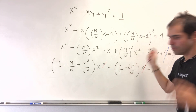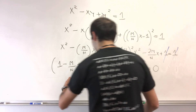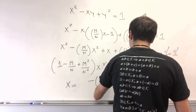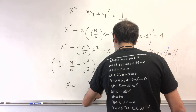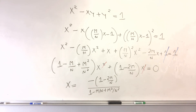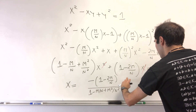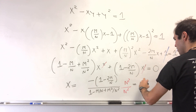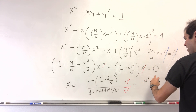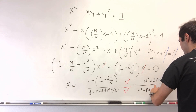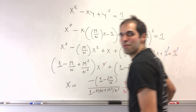That gives us an equation for x. So x becomes −(1 − 2m/n) / (1 − m/n + m²/n²). Multiplying numerator and denominator by n², we get x = (2mn − n²) / (n² − mn + m²).